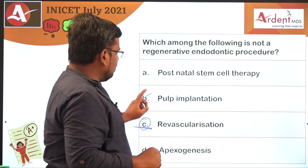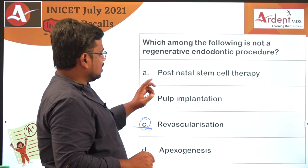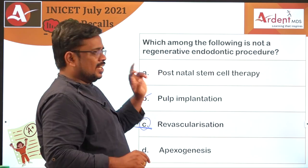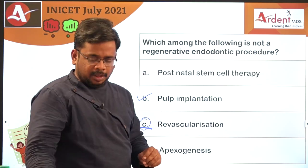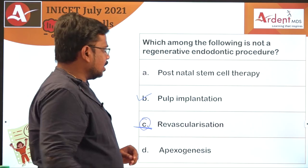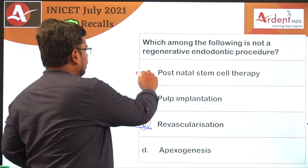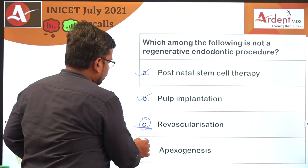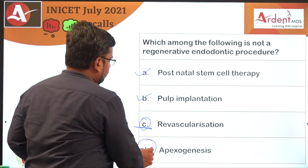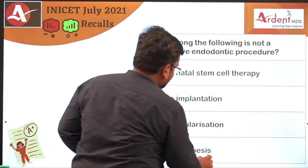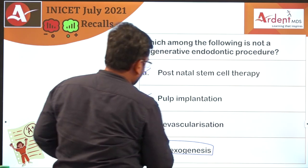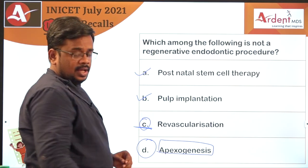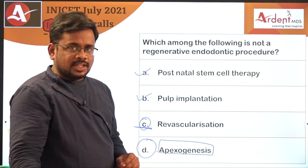So pulp implantation, revascularization, and stem cell therapy are all regenerative endodontic procedures. The one left out is apexogenesis. So the answer for this question is apexogenesis.